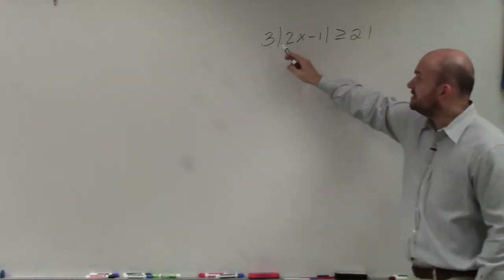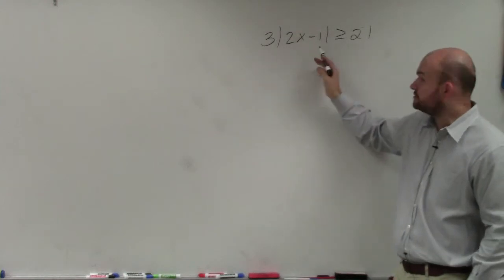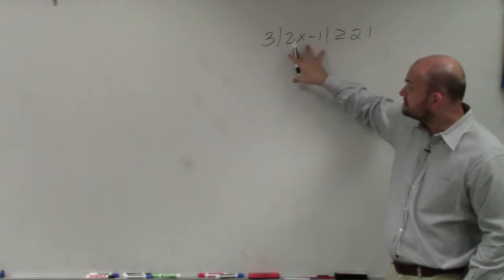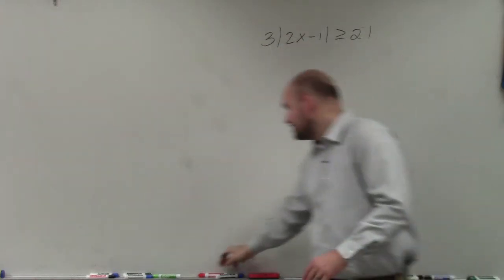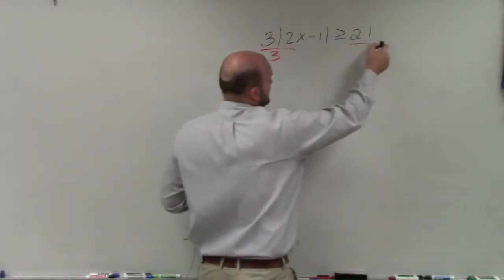So you can see, remember, the absolute value symbols are not parentheses. We cannot apply our distributed property. This represents the absolute distance. Right now, that absolute distance is being multiplied by 3. So we have to undo multiplying by 3 by dividing by 3.